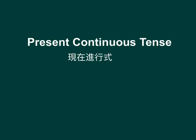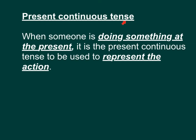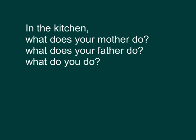我们会讲在厨房里面会做的事情。Present Continuous Tense: When someone is doing something at the present, it is the present continuous tense used to represent the action. 如果你想讲某人在现在做一个动作，那我们就会用 present continuous tense 来代表那个动作。In the kitchen, what does your mother do? What does your father do? What do you do?